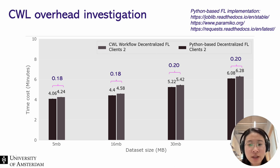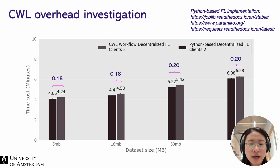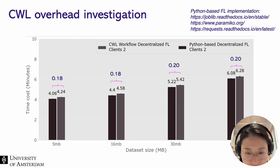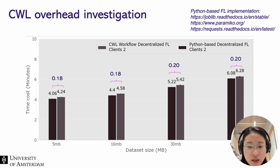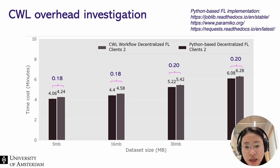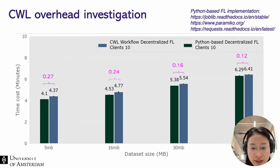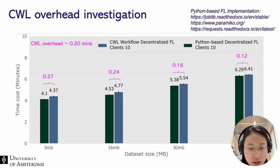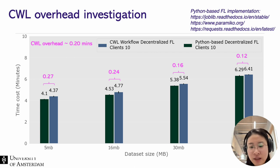We also investigated the CWL overhead compared to the pure Python-based federated learning implementation, in which we used Jupyter, Paramiko, and Requests to achieve automation of deployment and execution. As you can see, in the two-client scenario for the decentralized case, the difference between the Python-based and the CWL-based implementation — the average time overhead is around 0.19 minutes. And if we increase the client number, the average CWL overhead is about 0.20 minutes compared to the Python-based federated learning implementation — still very small.